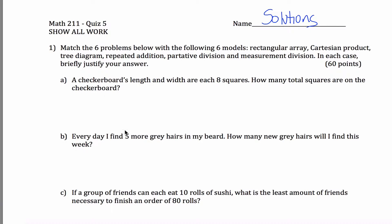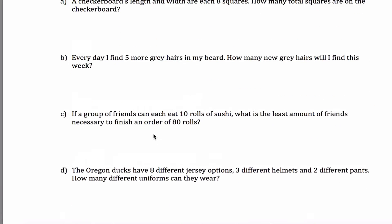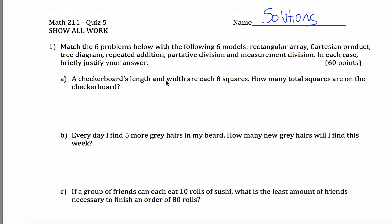And what you're supposed to do is take these six problems here and match them up. So checkerboard's length and briefly justify your answer. Maybe I'll just talk to briefly justify it. Checkerboard's length and width are each eight squares. How many total squares are on the checkerboard? There are 64 squares, but that's not what the question is. The question is which of these models, this would be your rectangular array.